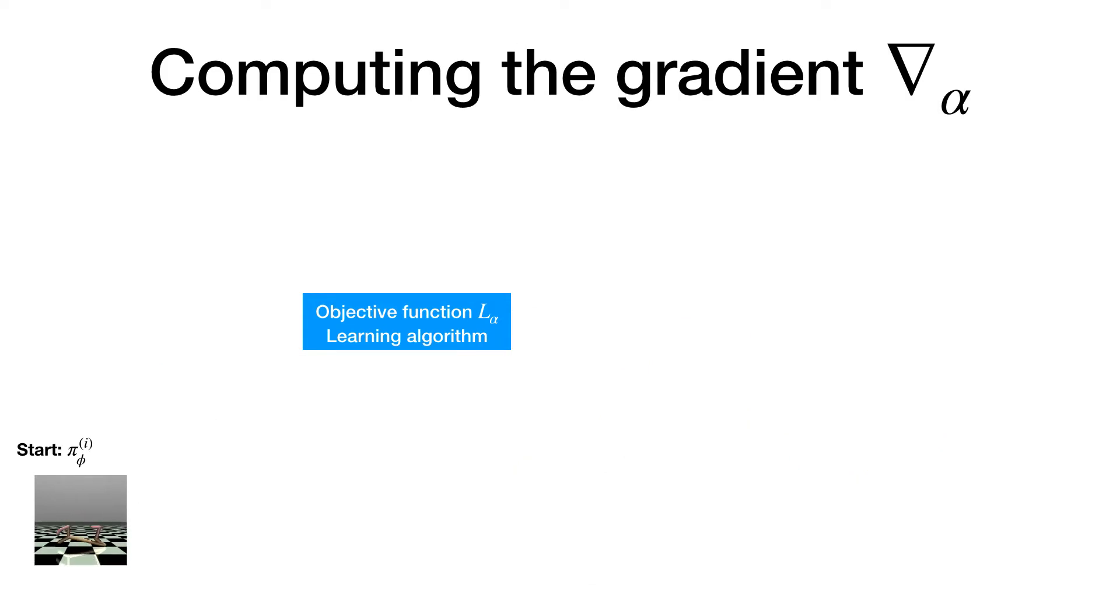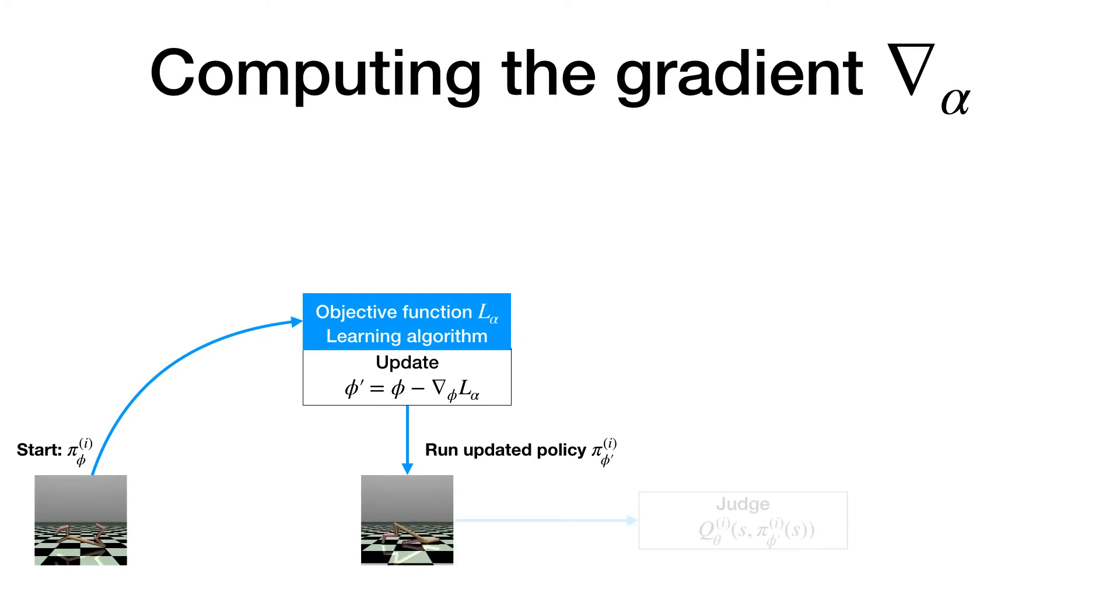Given the current agent parameters phi, we will first apply the current objective function to yield updated parameters phi prime. Next, we run the updated agent in the environment and use a q function to estimate how well the updated policy is able to perform.